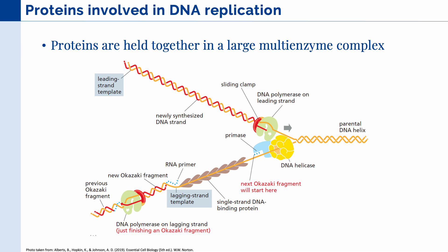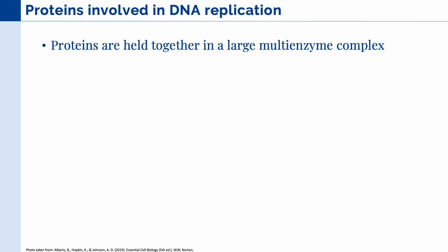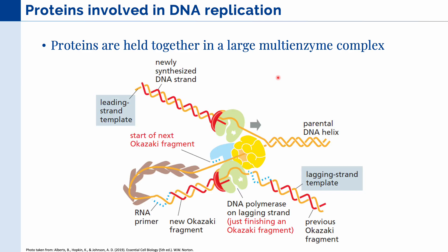In this figure, we can see all the different proteins involved at the replication fork. On the leading strand, there are only a few proteins actively involved — the sliding clamp and DNA polymerase creating the new strand in the 5' to 3' direction. On the lagging strand, a variety of proteins are active: DNA helicase, primase, single-strand DNA binding proteins, and DNA polymerase with its sliding clamp. In reality, all of these proteins are held together in a large multi-enzyme complex concentrated at the replication fork.